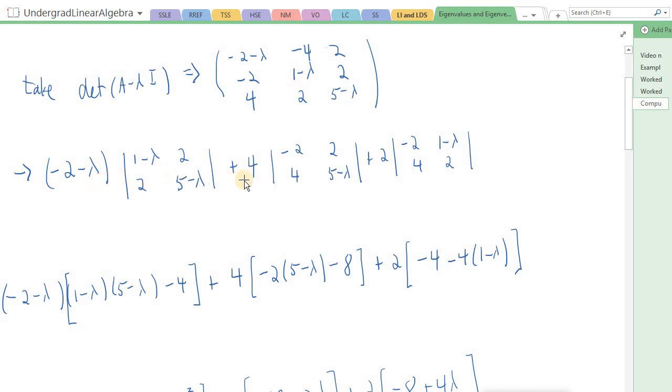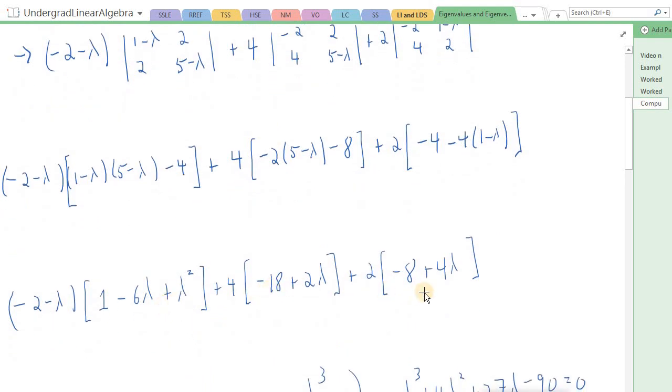Then we can do row or column expansion to find the determinant. So that's what I have down here. Here I did a row expansion on the first row. Notice this minus 2 minus lambda is here. Here's the determinant of the submatrix. This minus 4 becomes a plus 4 because of the checkerboard alternating of signs. Here's the submatrix here. This 2 corresponds to this 2. And then here is the submatrix here. So we can evaluate these determinants by the usual 2 by 2 rule. Diagonal entries minus the product of off-diagonal entries. And I did that here.